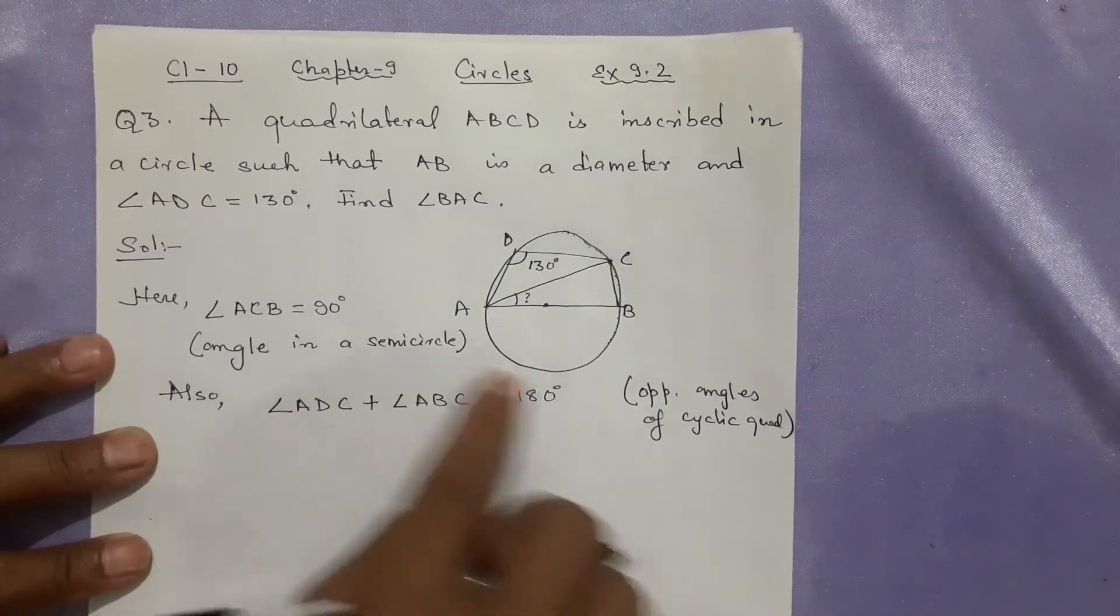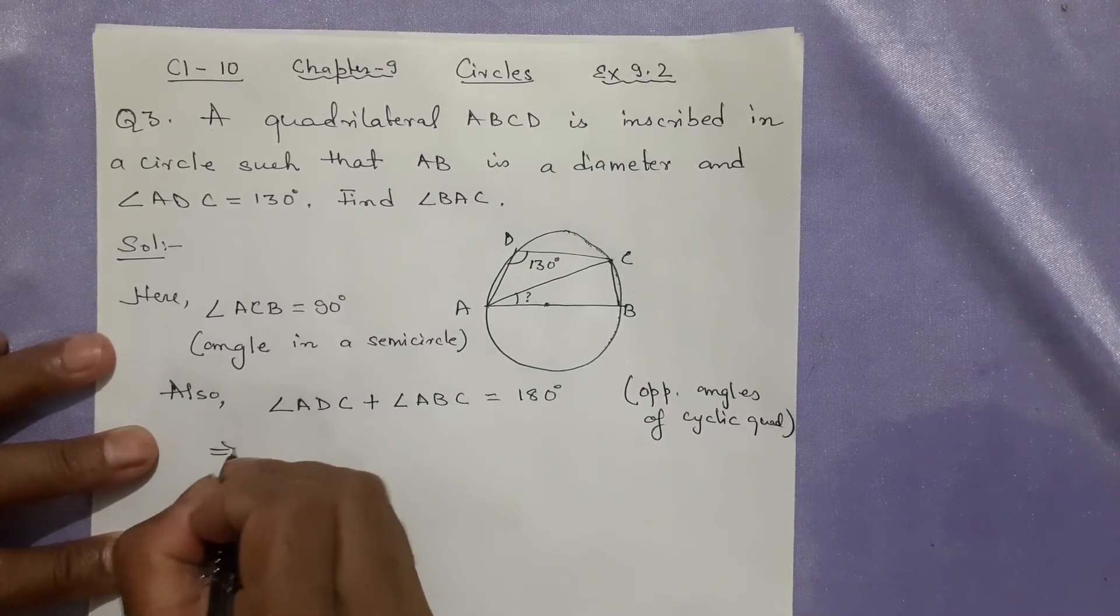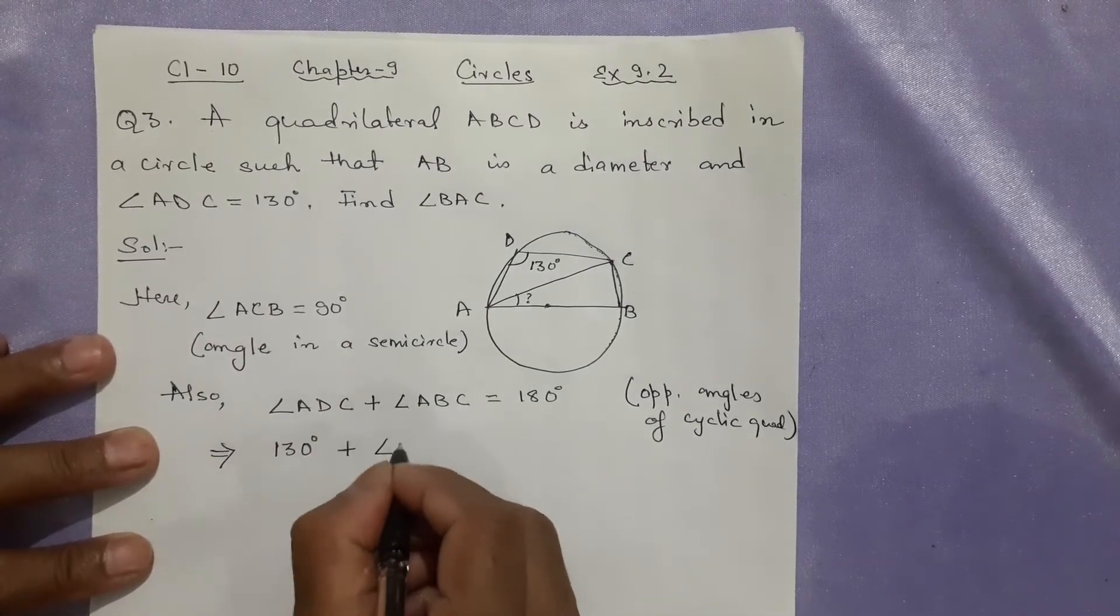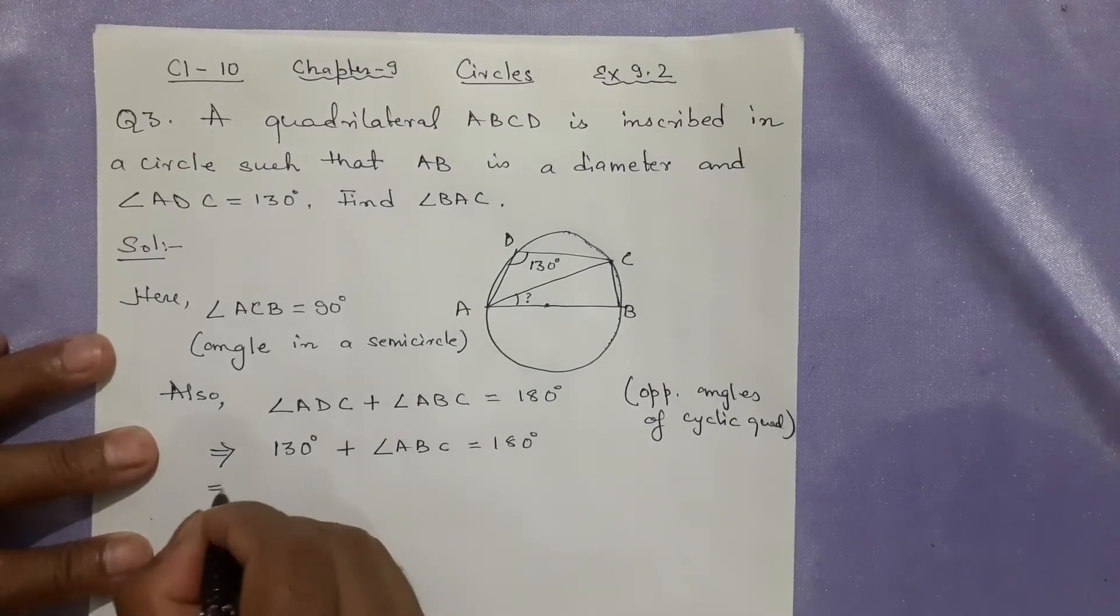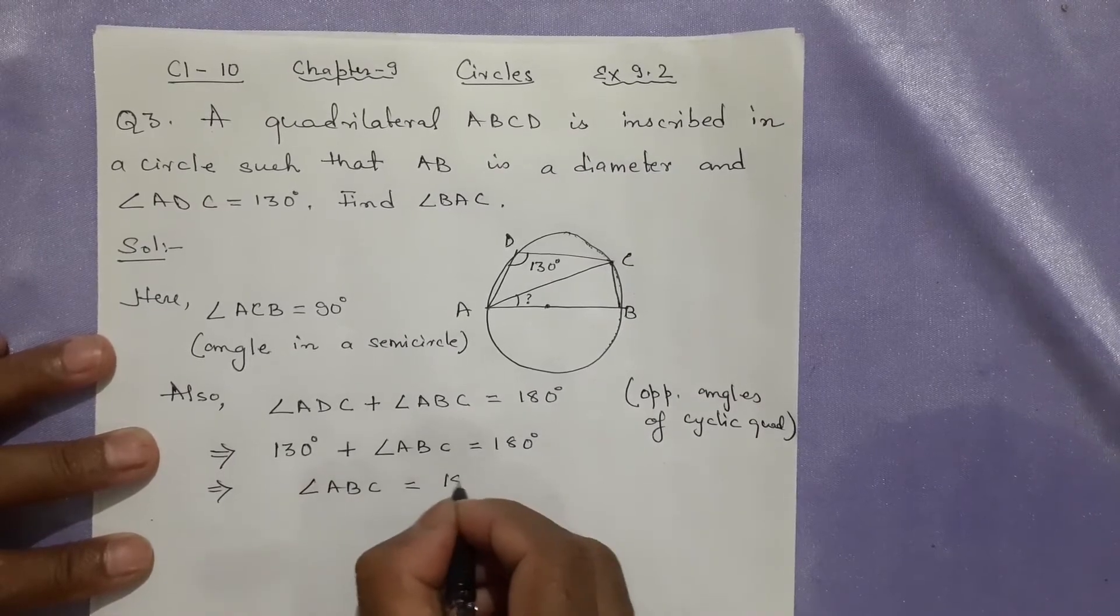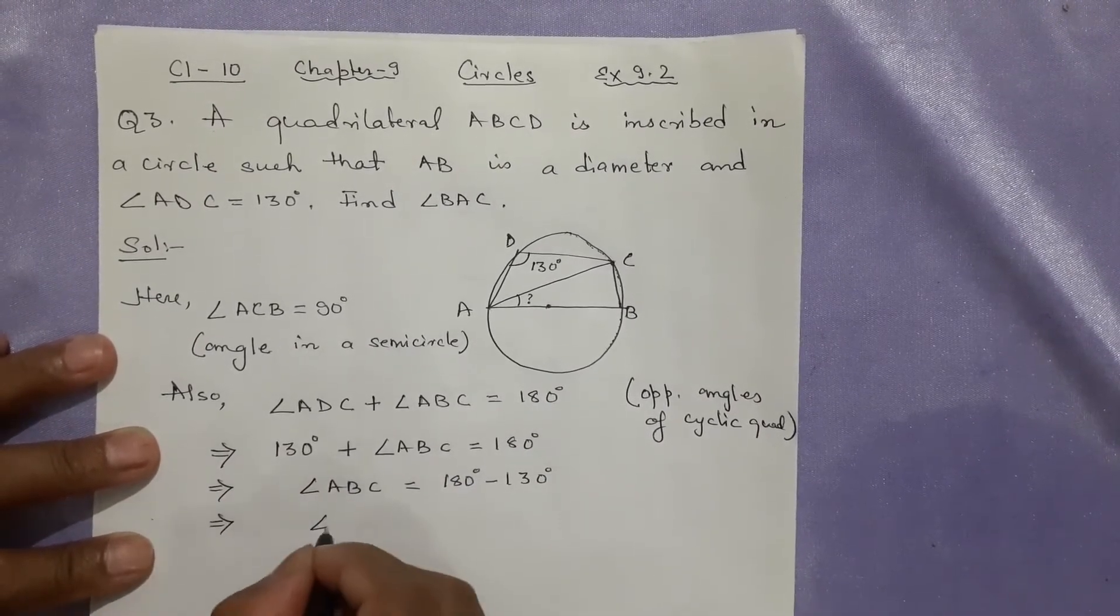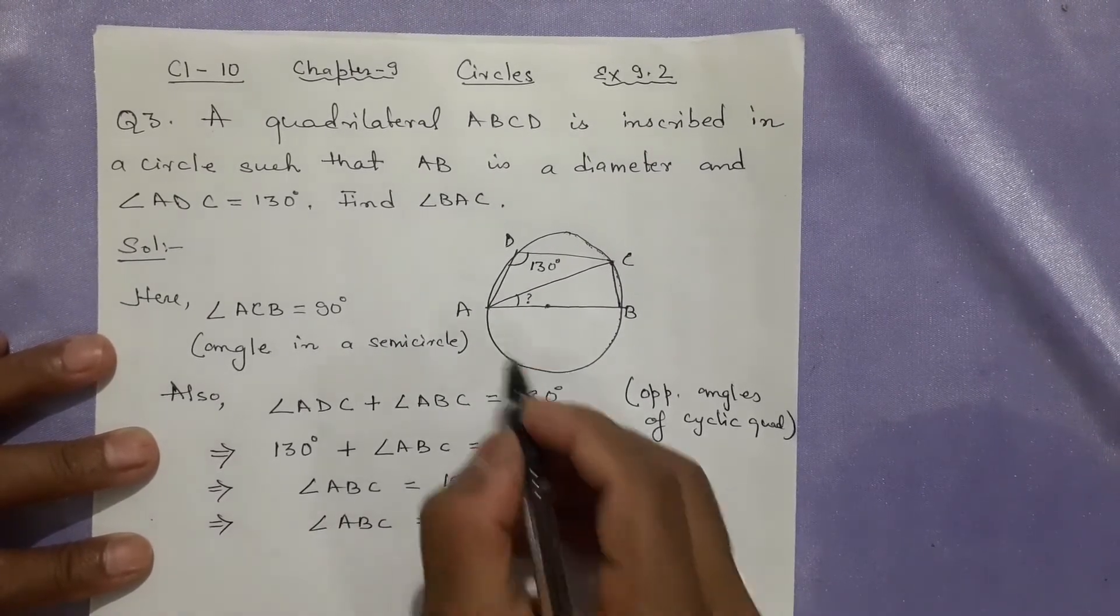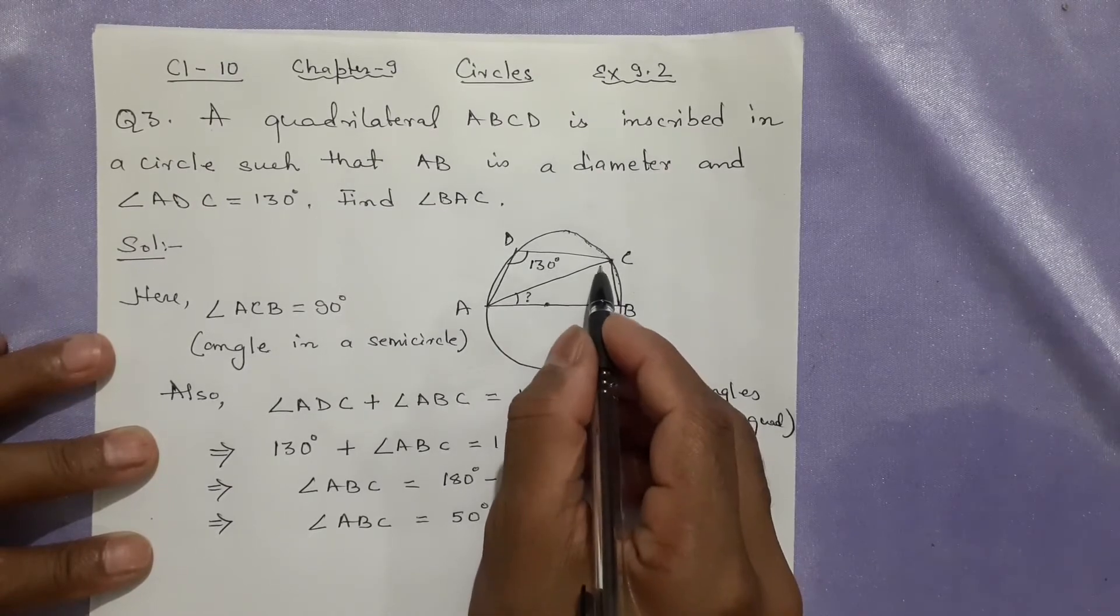Two theorems already used here. Now, angle ADC is 130°. Put it here: angle ABC will become 180° - 130° = 50°. Angle ABC is 50°, and this is 90°.